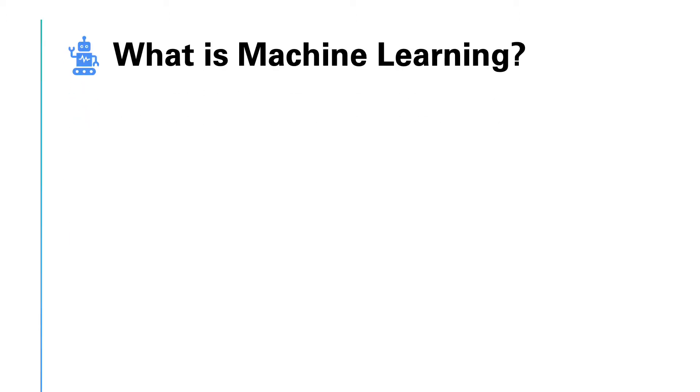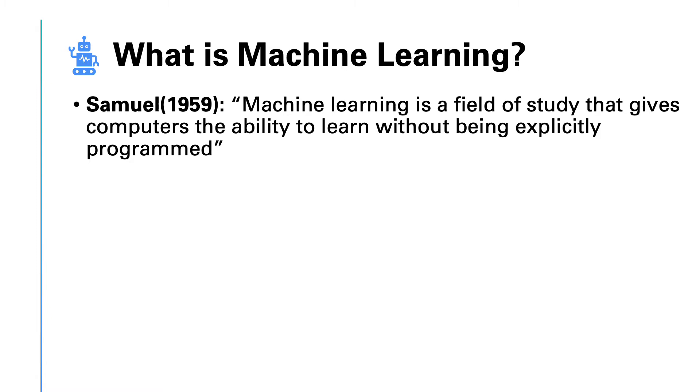So, what is machine learning? According to Arthur Samuel, who was a pioneer in the field of artificial intelligence, machine learning is a field of study that gives computers the ability to learn without being explicitly programmed. In that sense, we want to teach machines or computers to learn how to do tasks for us. This concept is different from the traditional computer programs that you might be familiar with.